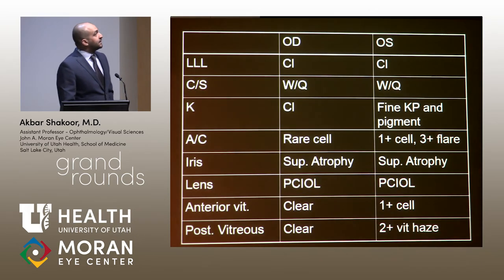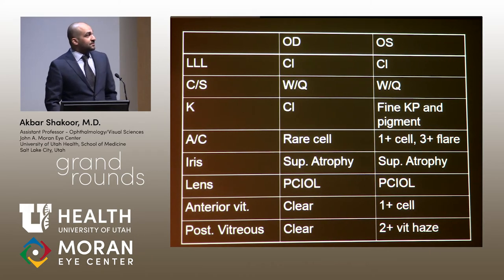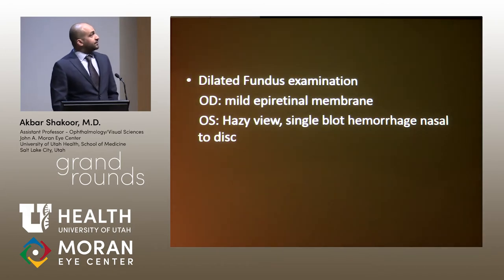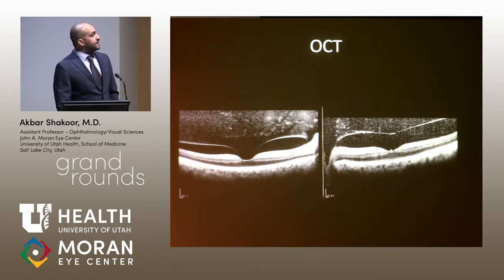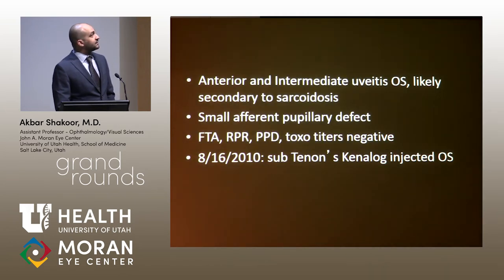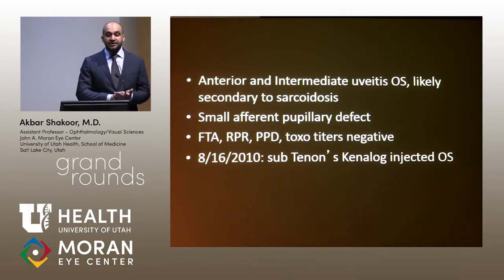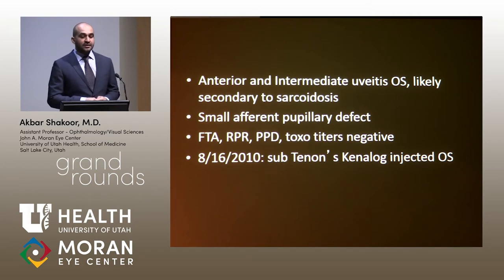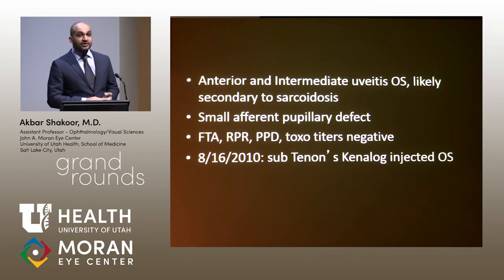His anterior chamber showed 1+ cell and 3+ flare. He had 1+ cell in his anterior vitreous with a lot of haze, and there was some posterior vitreous cell visible on OCT bilaterally. He was diagnosed with anterior and intermediate uveitis, likely secondary to sarcoidosis, with a small afferent pupillary defect. His infectious labs were negative, so a few days later we injected a sub-Tenon's Kenalog in the left side.